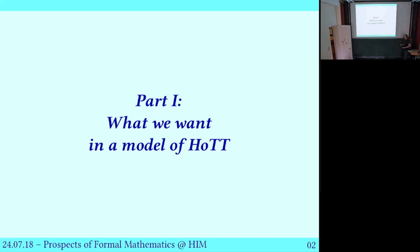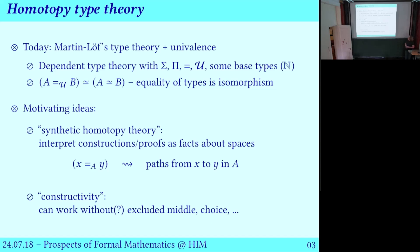Part one: what do we want in a model of homotopy type theory? Today when I talk about homotopy type theory, I just mean Martin-Löf's dependent type theory plus the univalence axiom. This is a dependent type theory with some basic type formers: sums, products, equality types, and some universes, maybe some base types like the natural numbers.